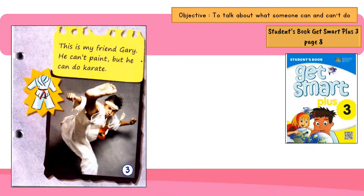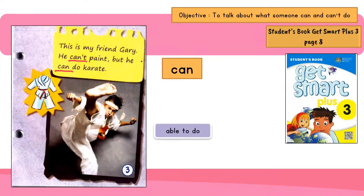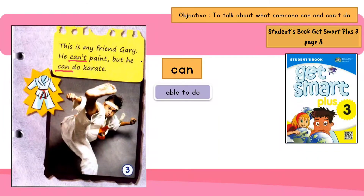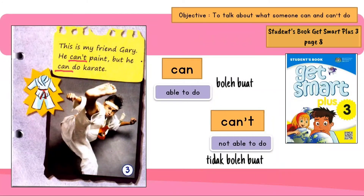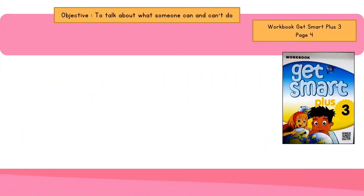Now look at this sentence: This is my friend Gary. He can't paint, but he can do karate. Look at the word 'can'. Can means able to do. However, can't means not able to do.